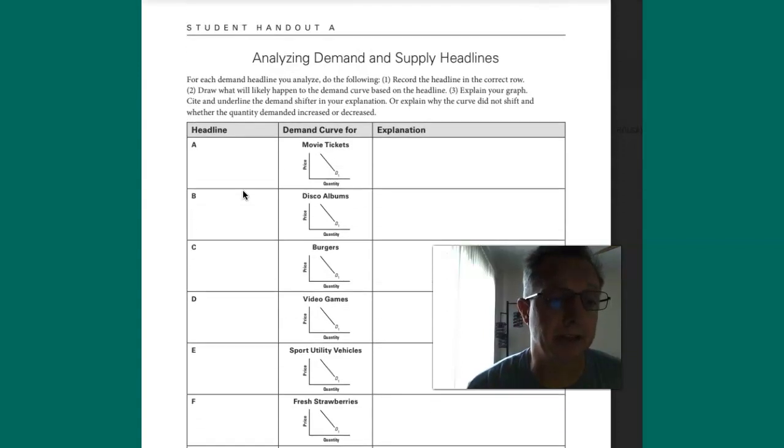What's going to happen? Actually that's headline A right here. What's going to happen to the demand for movie tickets? And because income is going to decrease, then the explanation should be that as a result of a decrease in demand, the demand will shift to the left.